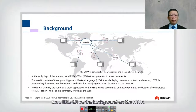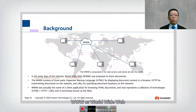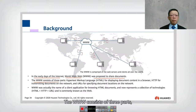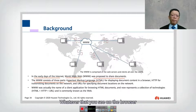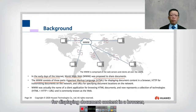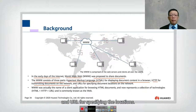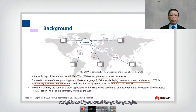In the early days of the internet, the World Wide Web was proposed to share documents. The WWW consists of three parts: HTML, which is the Hypertext Markup Language - whatever you see on the browser is actually HTML code for displaying document content; HTTP for transmitting documents on the network; and URL for specifying the location.